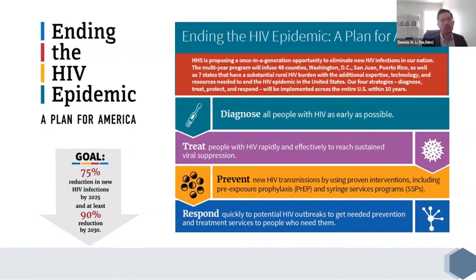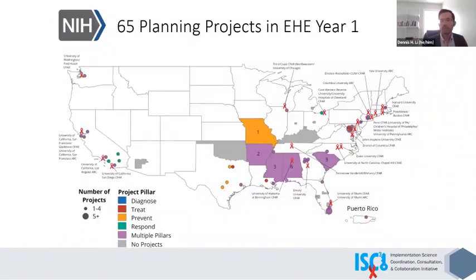There's a coordinated effort across all of the agencies within the Department of Health and Human Services, but for its role in the national plan, the NIH funds implementation research to study how to best put these interventions into practice. In year one of EHE, which began early 2020, the NIH funded 65 one-year planning projects in priority geographic areas across the country — these were the areas with the highest HIV incidence — and these pilot awards supported formative research to prepare for more extensive implementation research that was to come.